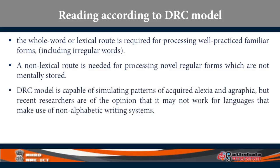The DRC model has been shown through decades of research to be capable of simulating patterns of acquired alexia and agraphia. Alexia is the reading disorder; agraphia is the writing disorder. They developed this DRC model by first creating a computational model, then artificially lesioning one route — and the computer produces errors which are similar to a patient's mistakes. That is how they developed this model. But recent researchers are of the opinion that the DRC model may not work well for languages which are very different from English from the point of view of the writing system.